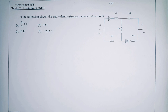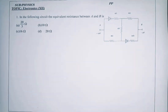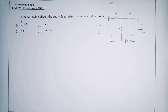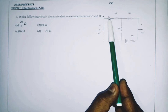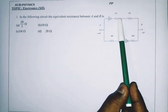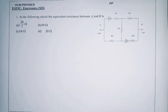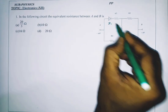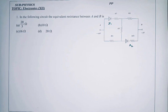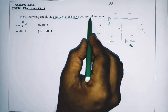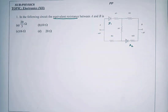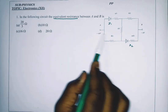Electronics. In the picture, you will see a question about the following circuit. The equivalent resistance between A and B. The circuit has Diode 1 and Diode 2, and four resistors. The equivalent resistance between A and B: A is minus 10 volts, B is minus 2 volts.